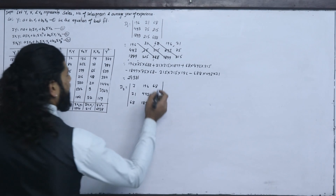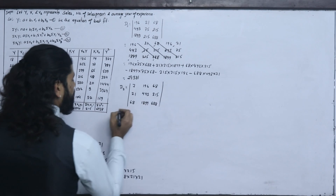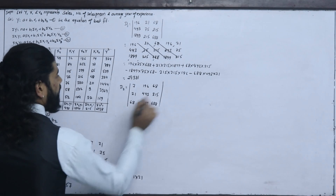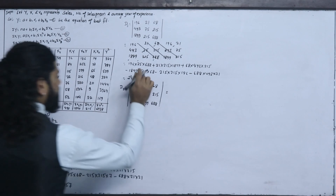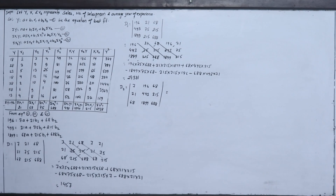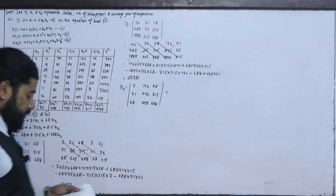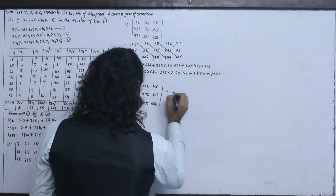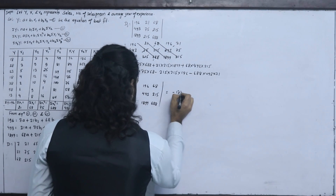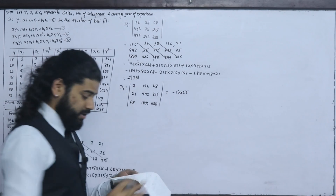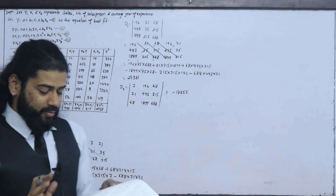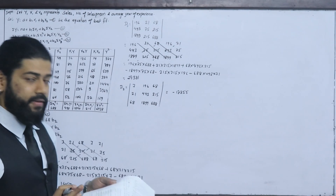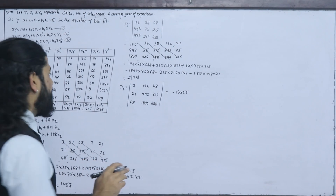If we expand it, the result gives minus 17855. So the value from the first calculation is minus 17855.